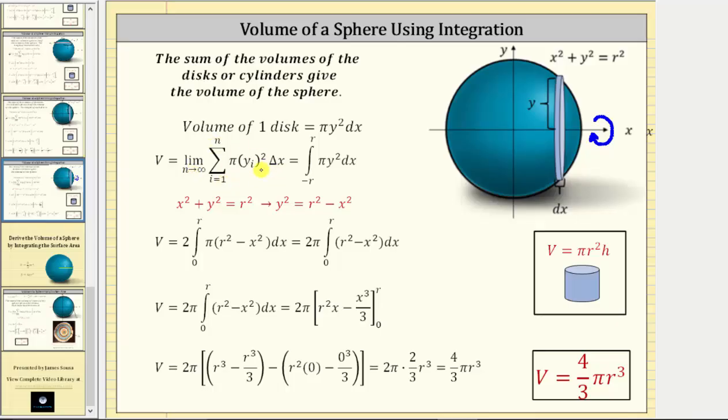And again, as the number of disks approach infinity, the sum of the volumes of the disks approach the volume of the sphere. And we know the limit of this sum is equal to the definite integral from negative r to r of pi y squared differential x.